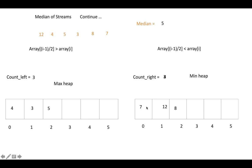After inserting 5 into the max heap, we check the max heap property: the parent at index (2-1)/2 = 0 should be greater than its child. It's not satisfied, so we swap again. Now both the max heap and min heap properties are satisfied, and we have processed all elements.